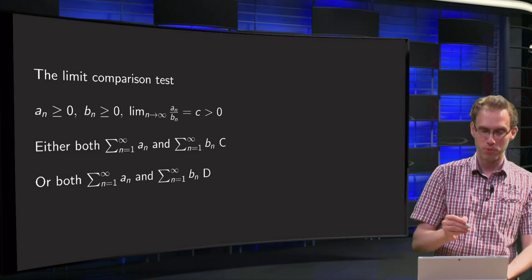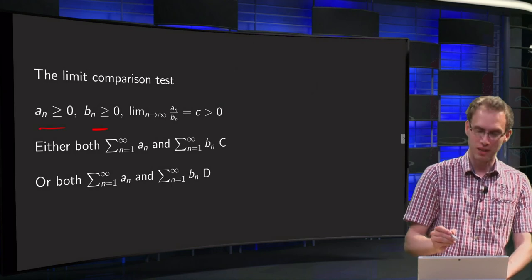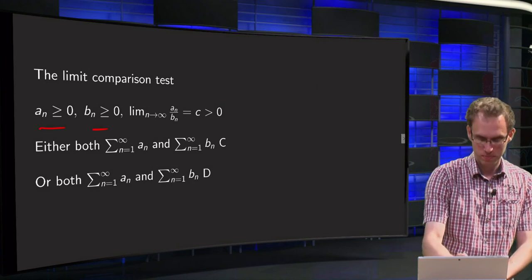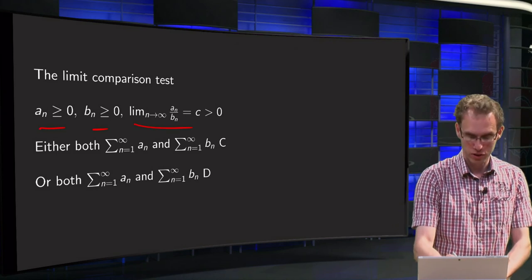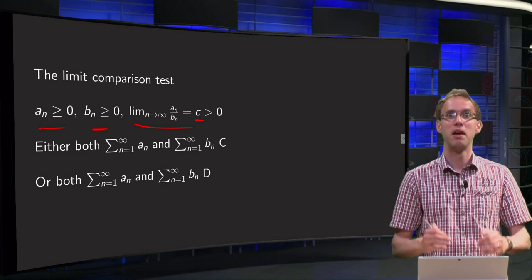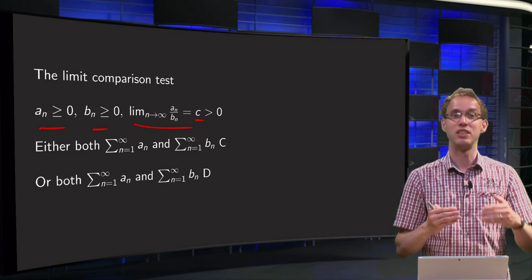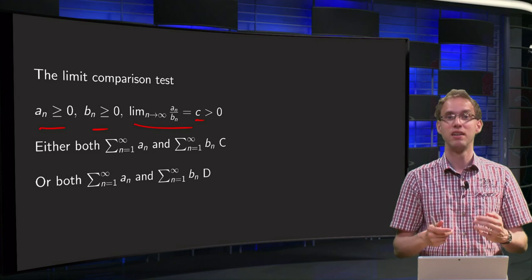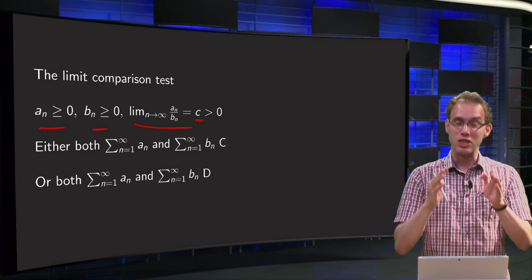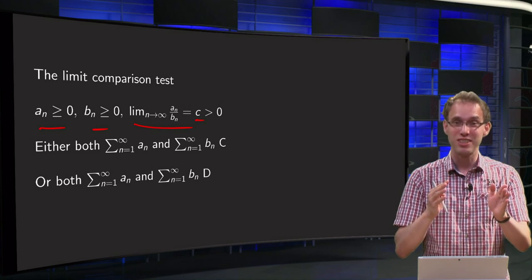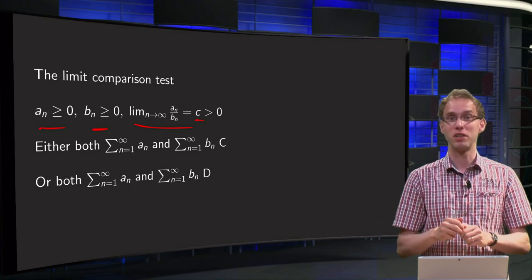Suppose we have two series with positive terms, a_n and b_n, and suppose I know that the limit as n tends to infinity of a_n over b_n equals some number c greater than zero. The only thing you need to know is that c is not zero and not infinity. Since a_n and b_n are all positive, c will be a positive number, and as long as it is not zero and not infinity, the limit comparison test works.